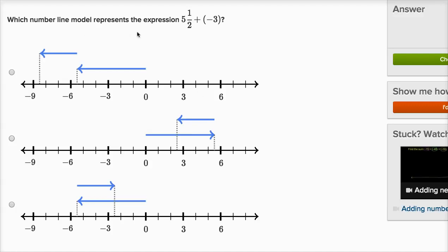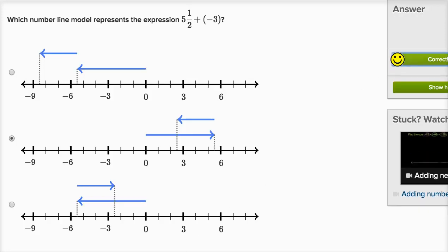Which number line model represents the expression five and a half plus negative three? I want to go five and a half to the right of zero. The first choice is five and a half to the left of zero, so that's negative five and a half — not what I want. The third choice also starts to the left. The second choice: we go five and a half to the right of zero, then three to the left, landing at two and a half. That's the correct choice.